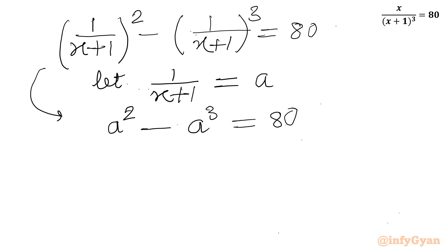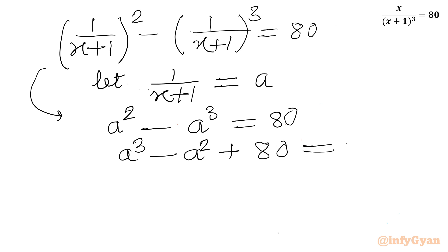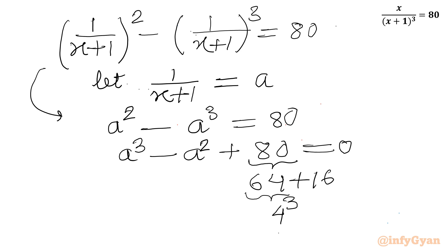Taking all terms to the right-hand side, I can write a cubed minus a squared plus 80 equal to 0. Now I can split 80 as 64 plus 16, where 64 is 4 cubed and 16 is 4 squared.